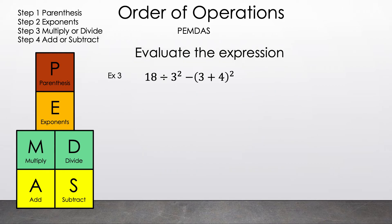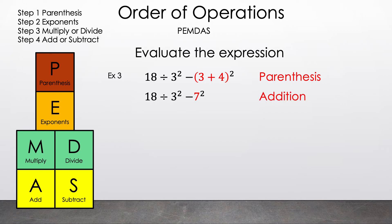Now let's move on to example three. Evaluate the expression 18 divided by 3 squared minus the parentheses of 3 plus 4 squared. We see parentheses, so let's highlight that first. Since there's only one operation inside, let's go ahead and do that. 3 plus 4 is 7. So now we have 18 divided by 3 squared minus 7 squared. Now we need to decide: division, subtraction, or the squared. Since square is a type of exponent, let's highlight that. Since the squares are on two different numbers and they're not affecting each other, it doesn't really matter which one you do first — you can do them at the same time. But we'll read left to right.